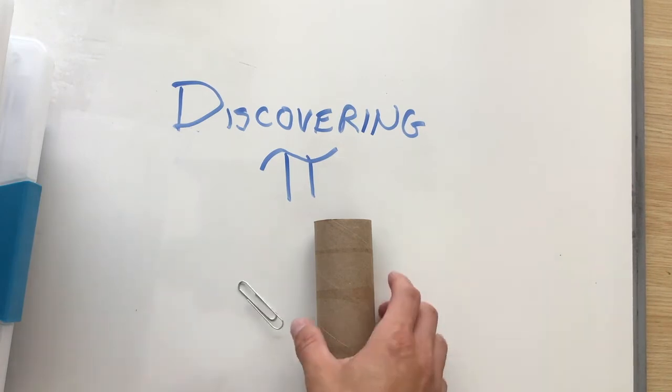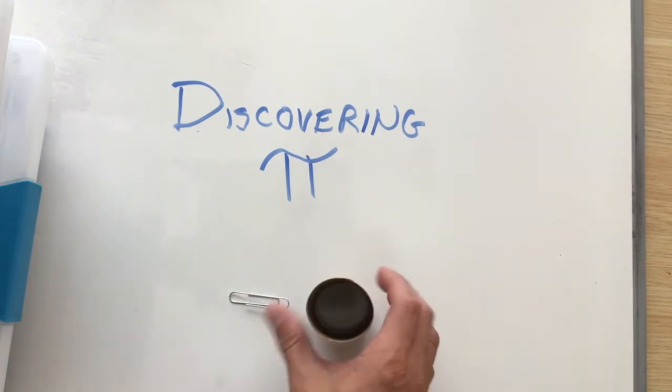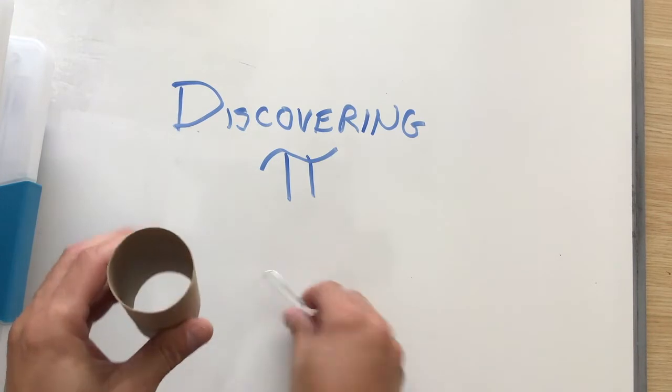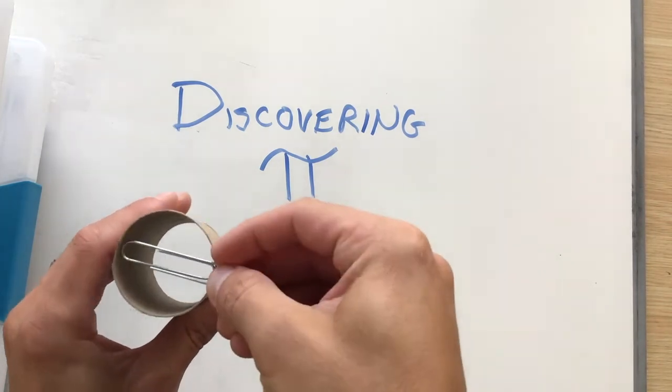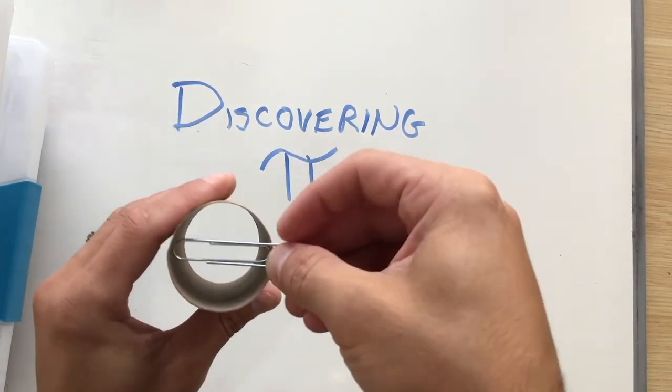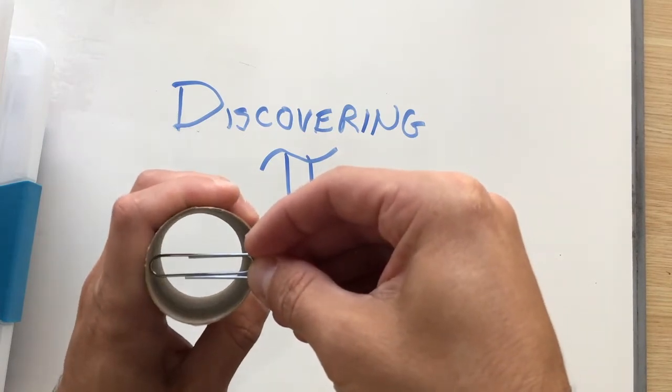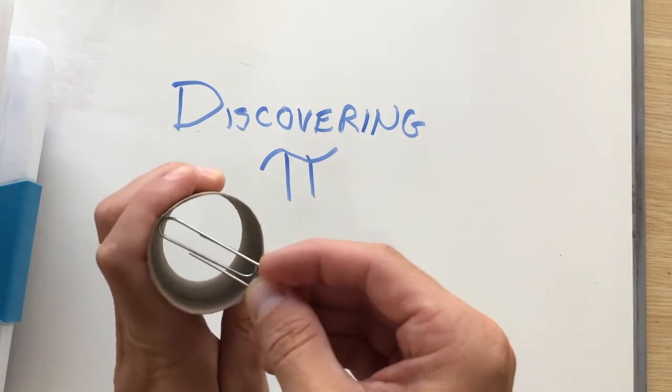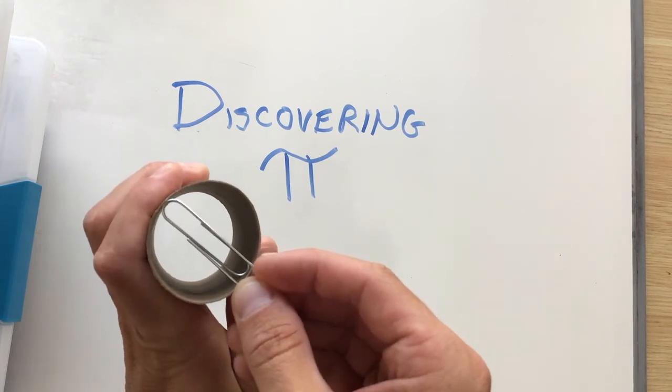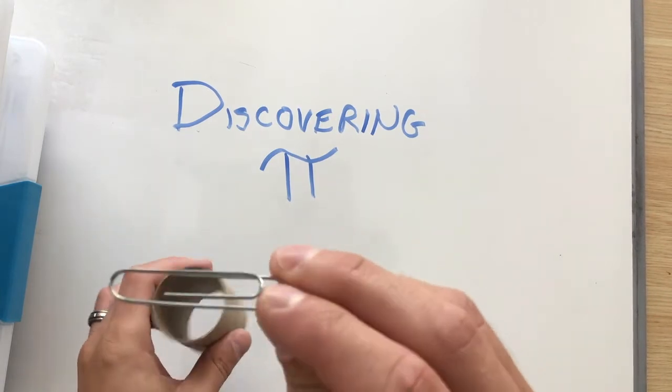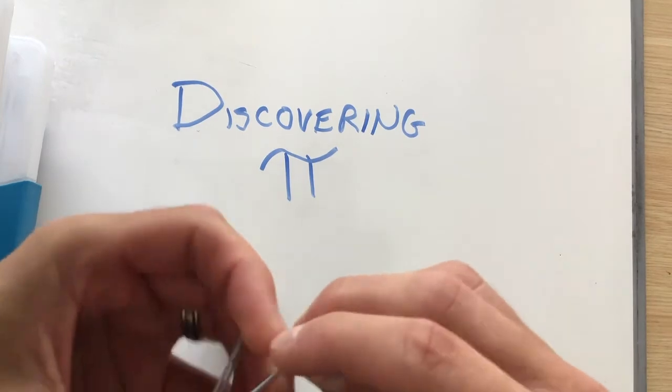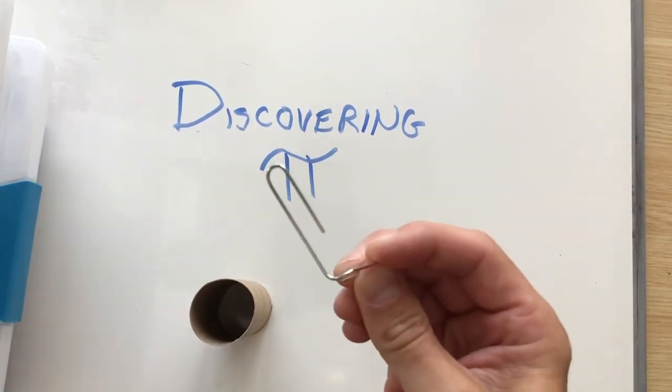So in this case, what I'm going to do is, why I chose a large paper clip is it's basically the diameter of the circle. So it basically more or less goes from edge to edge, going through the center. So the inside of my paper clip, this piece, is about the length of the diameter.